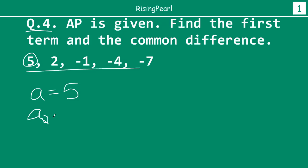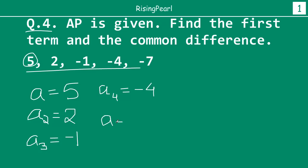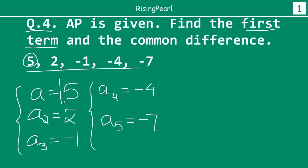Similarly, we can just look at it and say that A2, the second term, is 2. A3, our third term, is equal to minus 1. A4, our fourth term, is minus 4. And finally, A5, our fifth term, is equal to minus 7. You don't have to write all of these values — A1, A2, A3, A4, A5 — because the first term is very clear: that is 5. So we have actually found the first term.